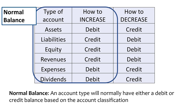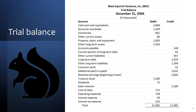This isn't to say that accounts can't have the other balance, but this is where we would normally expect the balances to be. On a trial balance, we have a listing of all accounts, starting with assets, liabilities, equity, then revenue and expense accounts.